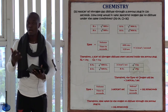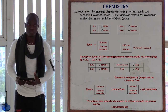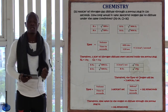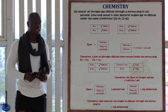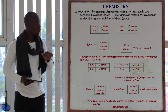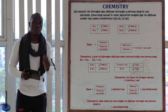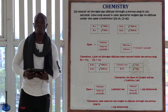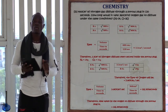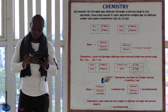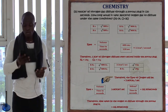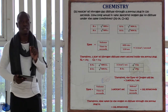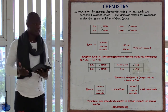Substituting the known values: 3.3 cm³/s for nitrogen over the rate of oxygen equals the square root of 32 grams divided by the square root of 28 grams. Solving this correctly gives us the rate of oxygen gas equal to 3.087 centimeters cubed per second.